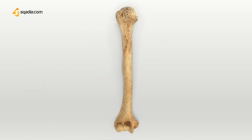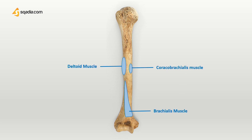The deltoid inserts into the deltoid tubercle around the middle of the surface. From the distal part, the lateral portion of the brachialis muscle originates. Coming to the anteromedial surface of the humerus, it provides the attachment for the coracobrachialis muscle around its mid portion.